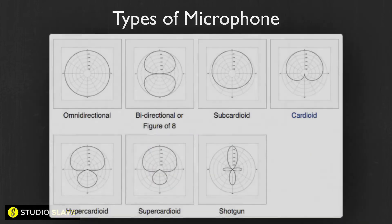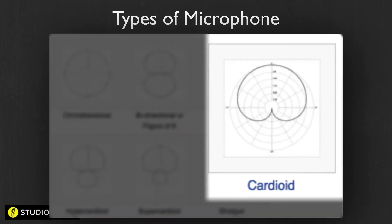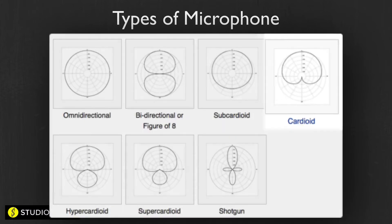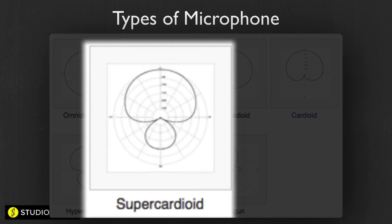The main polar patterns are: cardioid, which picks up from the front of the mic — you aim it where you want to hear and it rejects most sound from the back. Then there's super cardioid, which is similar to cardioid but more precise; however, it does pick up sound from directly behind the mic, while rejecting sound to the sides a little better than a standard cardioid.